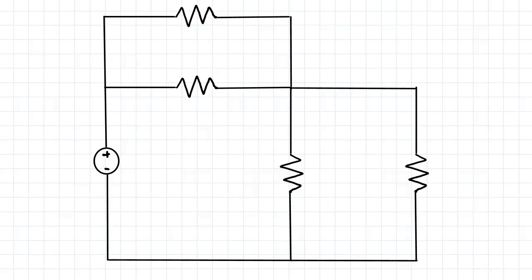We begin with the number of branches. We have one branch over here, which is the voltage power source. We have another branch over here, which is a resistor. Another branch over here, which is a resistor. Another branch over there, and another branch over there. So that brings the number of branches B equal to five.